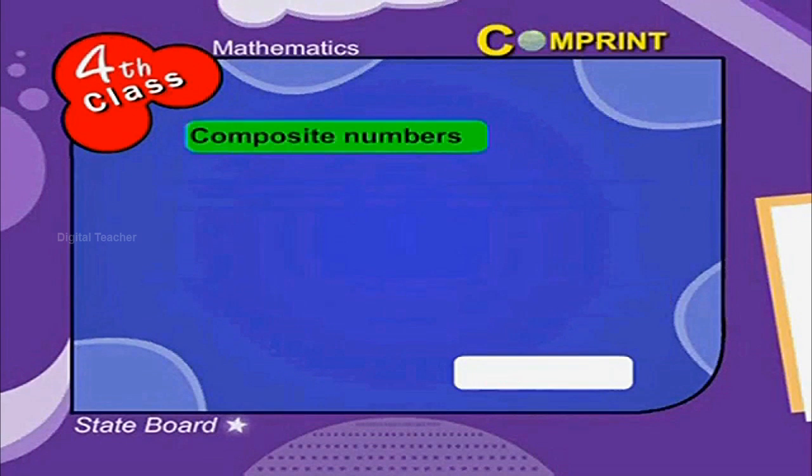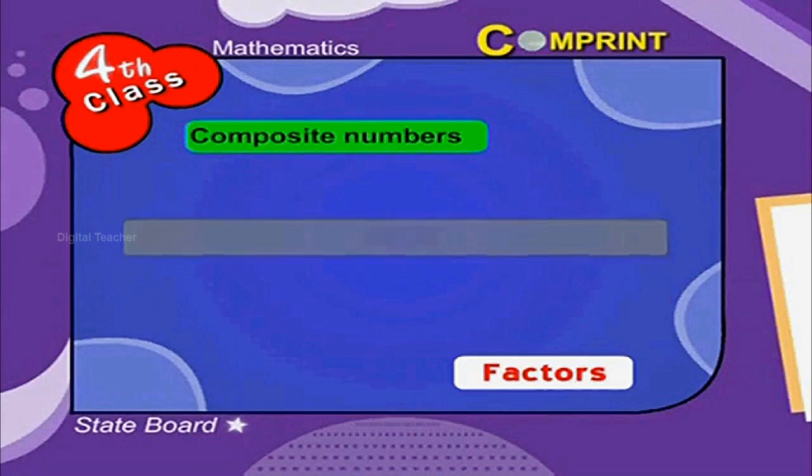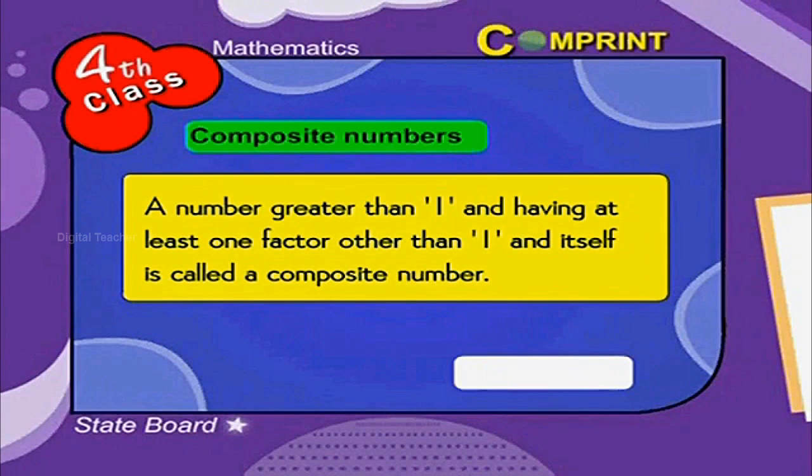Composite number: A number greater than 1 and having at least 1 factor other than 1 and itself is called a composite number.